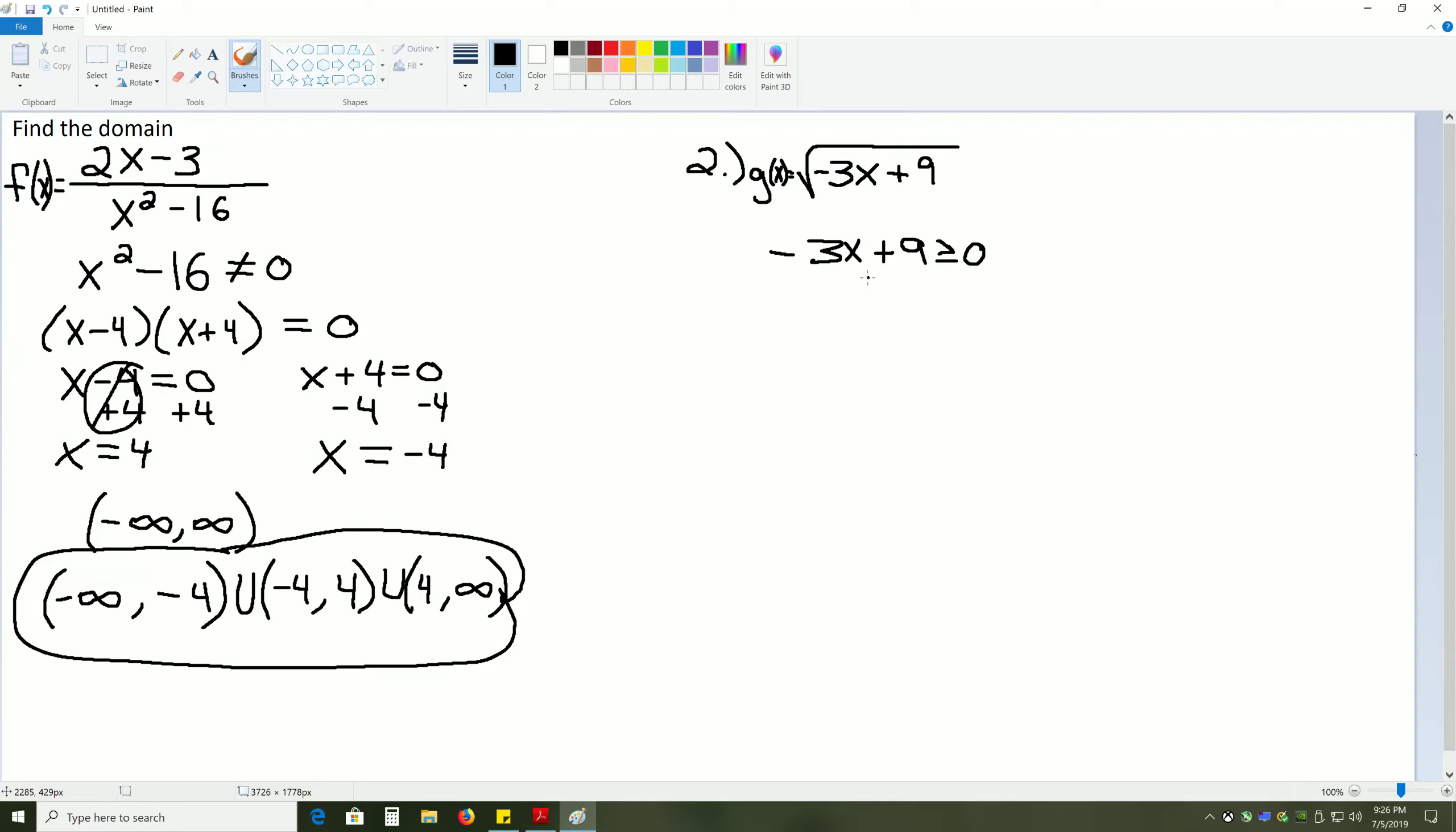So, if we begin solving for x, we'll subtract the 9 from each side to get negative 3x is greater than or equal to negative 9. And then dividing each side by negative 3 to get the x alone, we'll get x and positive 3. Negative 9 divided by negative 3 is positive 3. And because we divided by negative, we have to flip the inequality, meaning this will become x's less than or equal to positive 3.